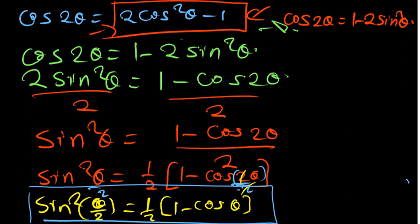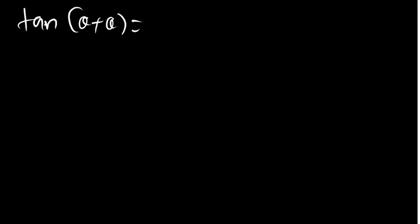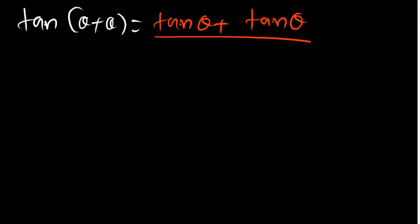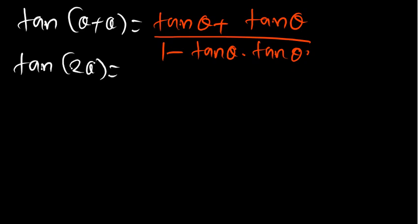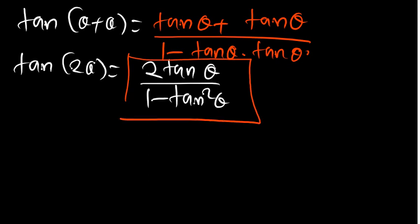Now that we have talked about sine and cosine double angles, let's go to tangent. For tan of theta plus theta, we know this is going to be tan theta plus tan theta divided by 1 minus tan theta times tan theta. Theta plus theta is 2 theta, tan theta plus tan theta is 2 tan theta, and tan theta times tan theta is tan squared theta. So wherever there is tan 2 theta, you can replace it with 2 tan theta over 1 minus tan squared theta.